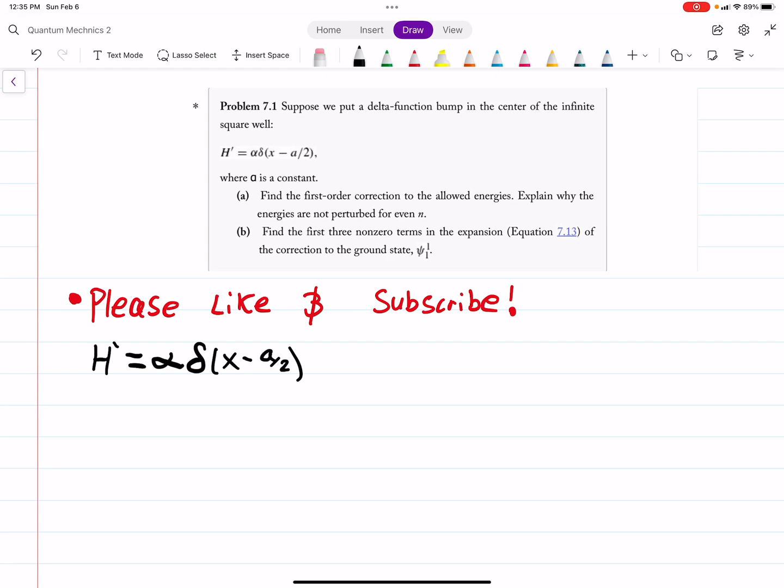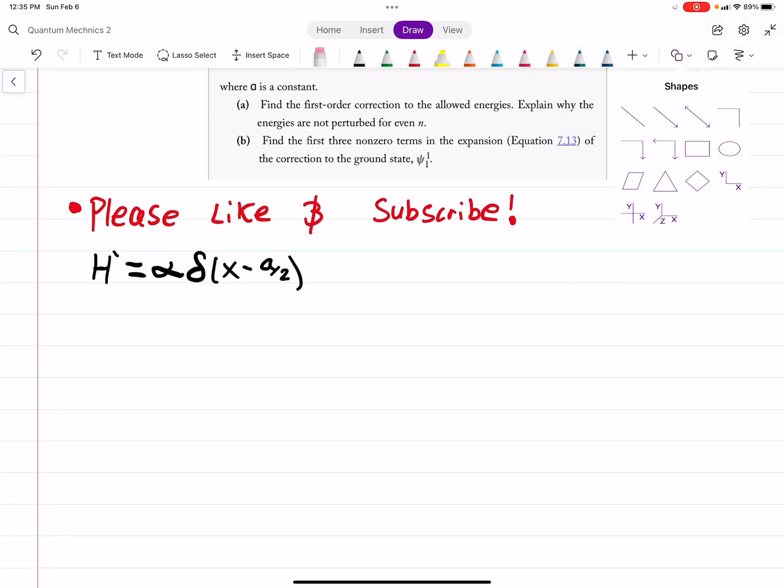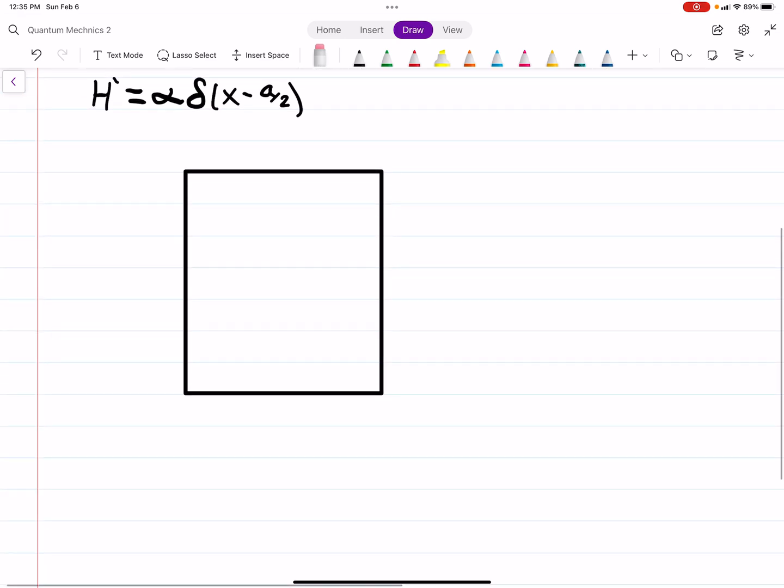Suppose we put a delta function bump in the center of an infinite square well, H prime equals alpha delta x minus a over 2, where alpha is a constant. So this is our, hopefully you're familiar, this is from chapter 2 in the textbook. If you can imagine this going off to infinity, being our potential, and then 0 here.